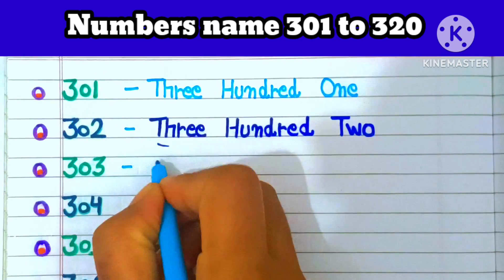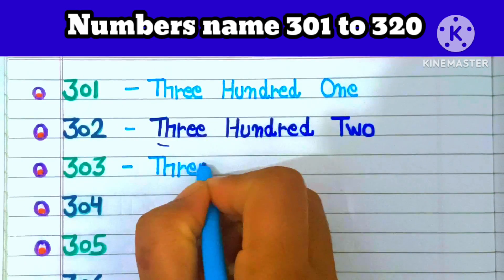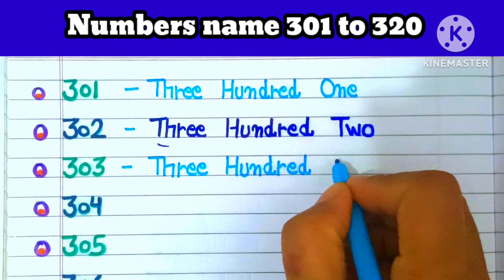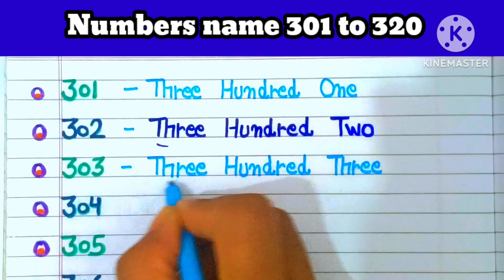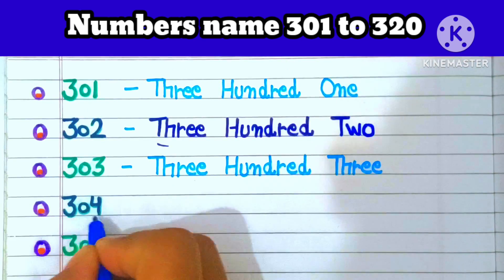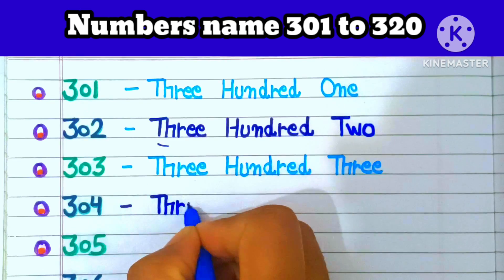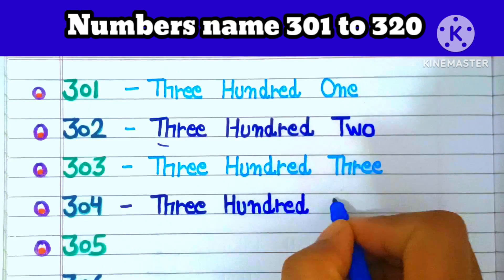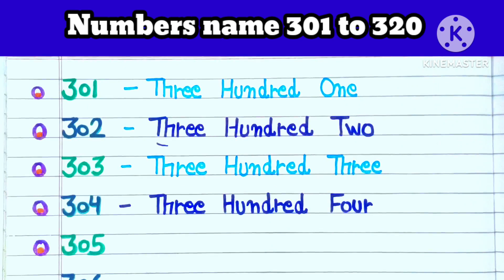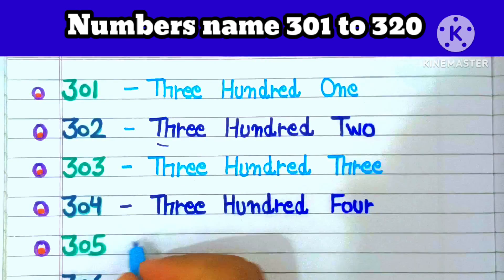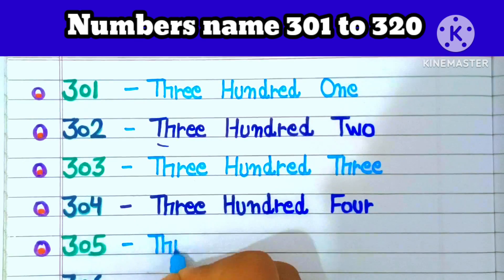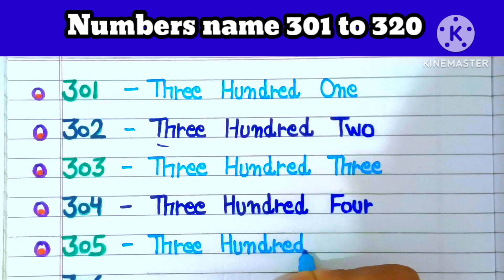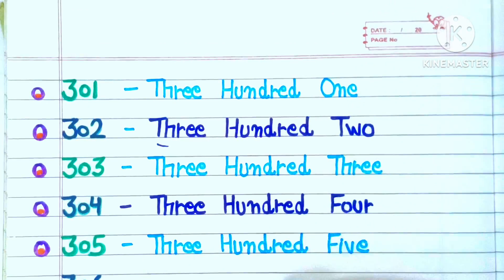303: THREE HUNDRED THREE. 304: THREE HUNDRED FOUR. 305: THREE HUNDRED FIVE.